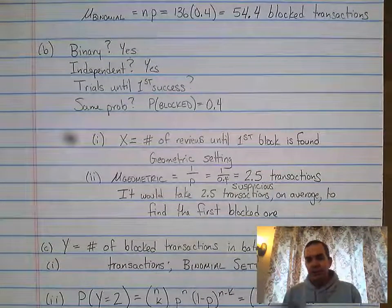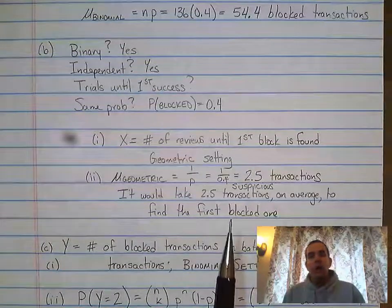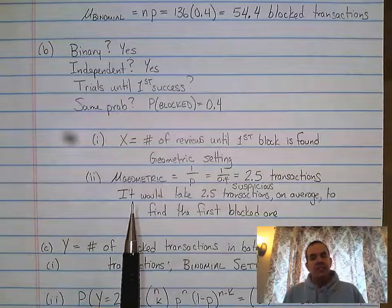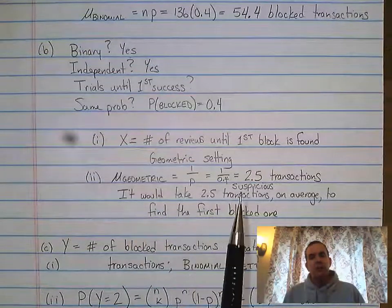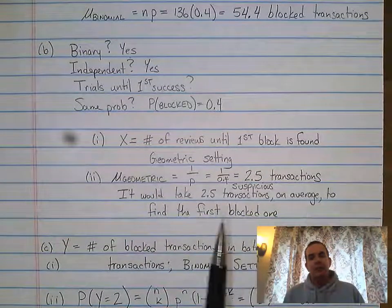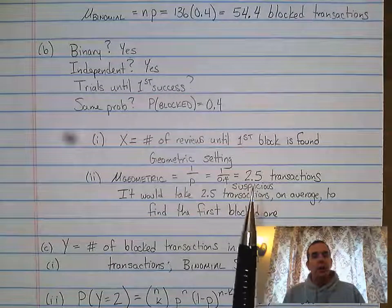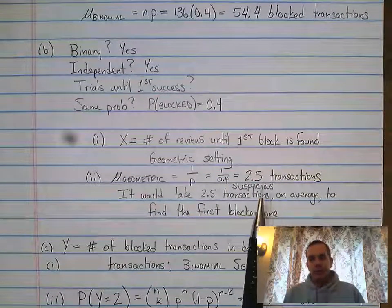And then it actually asks for an interpretation. That's something new that I hadn't seen before. When you're talking about that, you had to write out in English what it is. So in this case, it would take 2.5 suspicious transactions on average to find the first blocked one. That's your interpretation of the mean of a geometric.